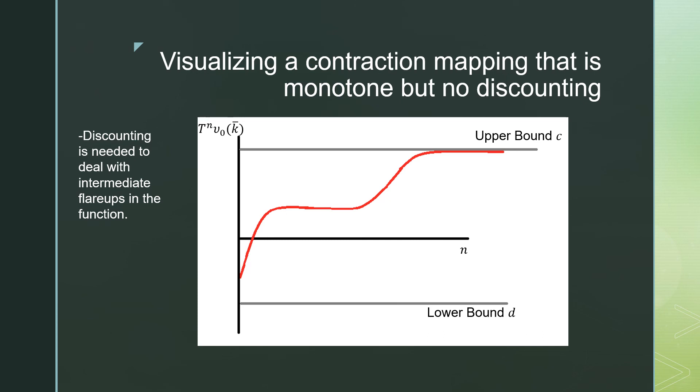So without discounting, we can have these sort of intermediate flare-ups. We can see where we have a concave curve and then it just lifts up again, becoming a concave curve again, converging at our upper bound C, that would be our V star. And that would be considered a contraction mapping, at least I think so.